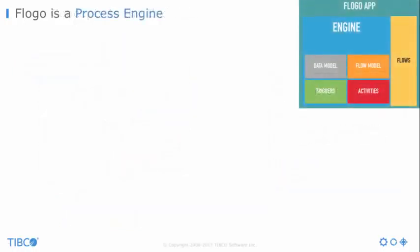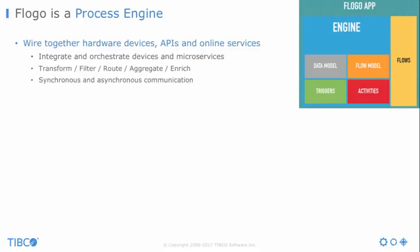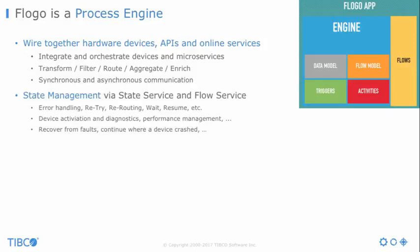What's very important to understand is that FLOGO is a process engine. You wire together hardware devices, APIs, and online services. You leverage integration and orchestration features for transformations, filtering, and so on, using both synchronous and asynchronous communication. It's also about state management — state and flow services covering things like error handling, retrying, rerouting, waiting and resuming. This is important in IoT for scenarios like device activation, diagnostics, performance management, or recovering from faults. There are many scenarios where you really need state, and this is what a process engine helps with, even when integrating many different devices and sensors.